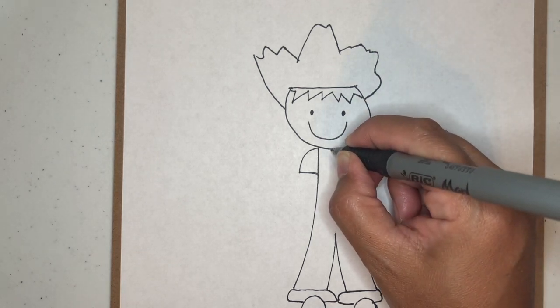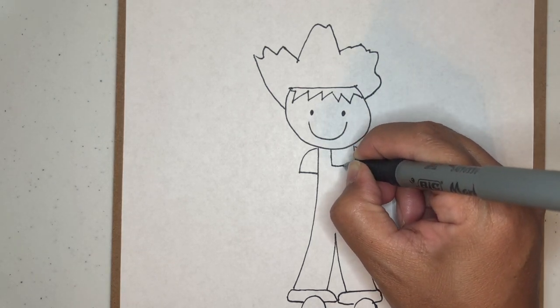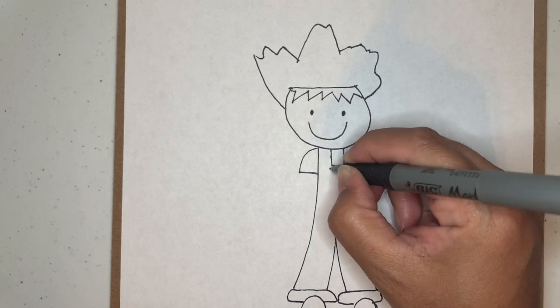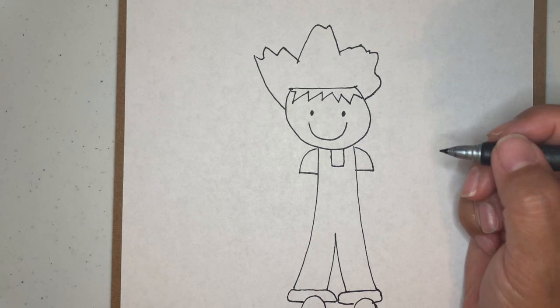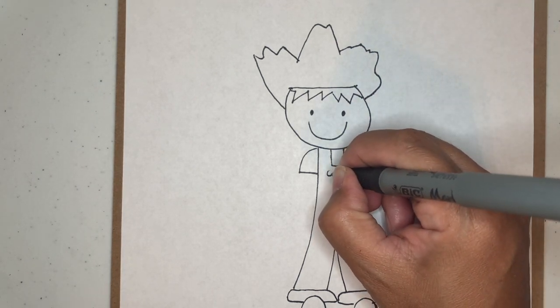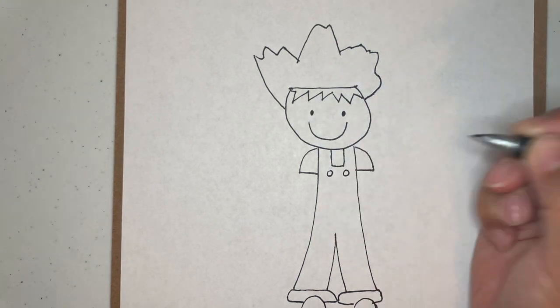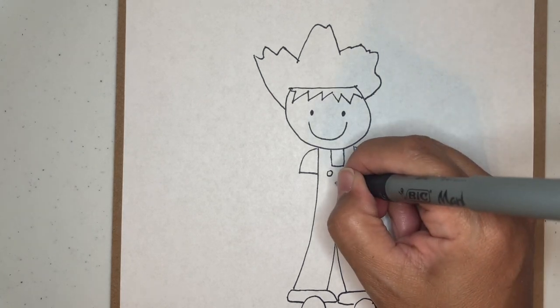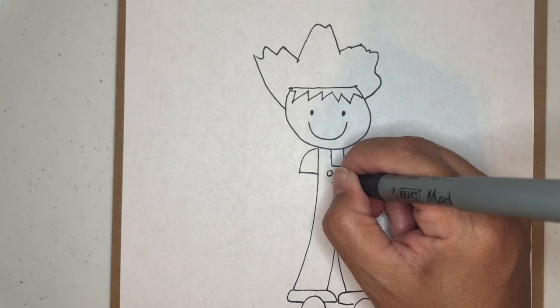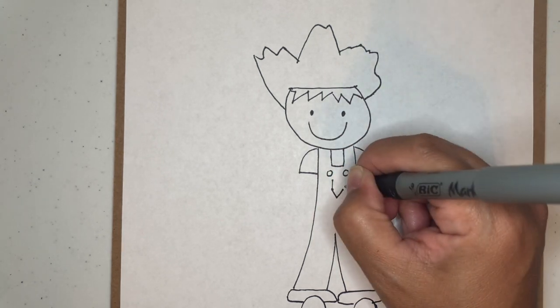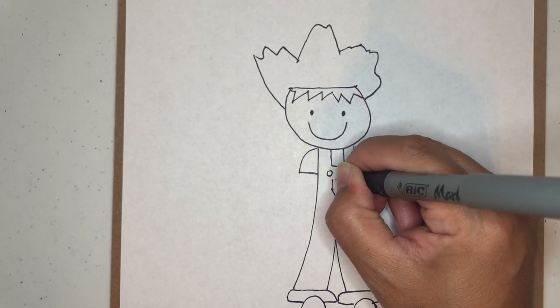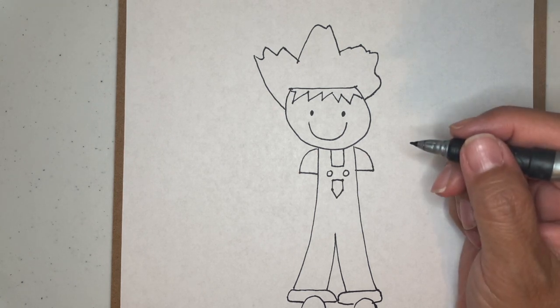So, for your overalls, you need an opening so you can breathe. So, here is like a straight U right here. Like a rectangle right there. And then, your overalls need buttons and a pocket. So, you're going to go down, and then like a triangle like that, up, and across. Okay, that's a pocket.